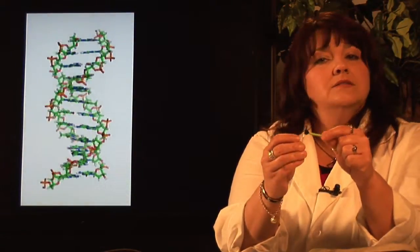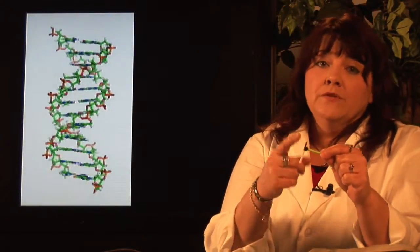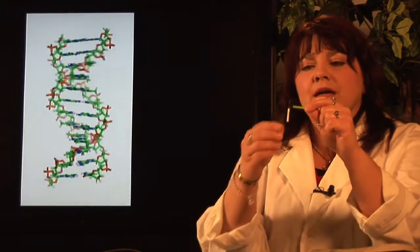Each subunit consists of a sugar. In the case of DNA, it's deoxyribose. That's where the D in DNA comes from. A phosphate molecule, which ends up forming the backbone or the sides of the ladder.